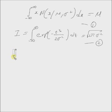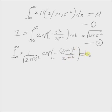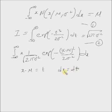Let's start with the LHS of equation one, which is the integral from minus infinity to plus infinity of x multiplied by one over the square root of two pi sigma squared, multiplied by the exponential of minus (x minus μ) squared over two sigma squared dx. Now we use a change of variable — let's rename x minus μ as t. This implies that dx equals dt and x equals t plus μ.